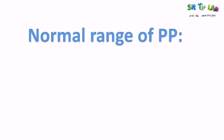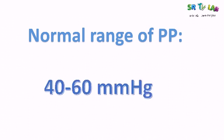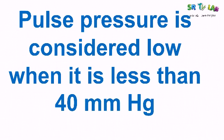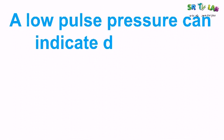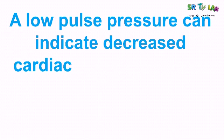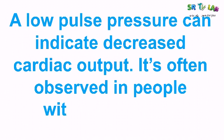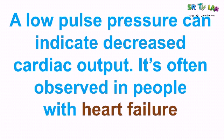The normal range of pulse pressure is between 40 to 60 mmHg. Pulse pressure is considered low when it is less than 40 mmHg. A low pulse pressure can indicate decreased cardiac output and is often observed in people with heart failure.